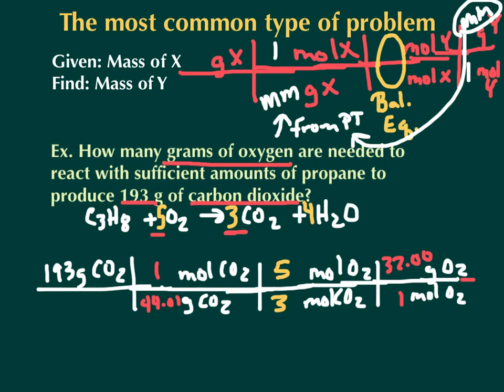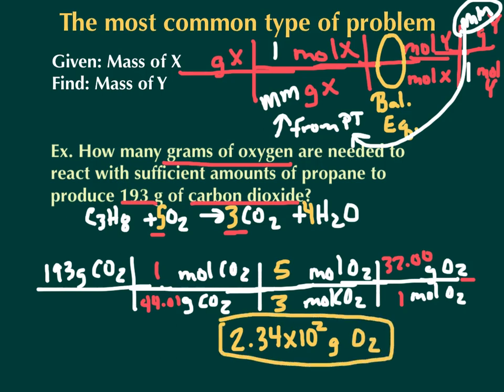And here's what I got in the correct scientific notation and the correct number of sig figs. I got 2.34 times 10 to the second grams of O2. Now, if you're saying, I got 234, well, that's what I got, too. I just put it in the scientific notation. You really want to make sure that you have this general setup up here for mass-to-mass problems in your notes. Make sure you have that, because that's the same setup that will follow. The X's and the Y's will change, but that's the same setup each time.